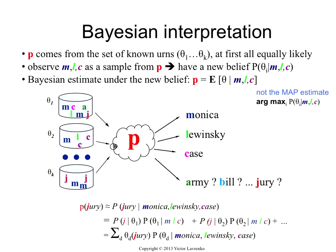So for each document D, I take the probability of seeing that urn under that document — that's just the relative frequency with a little bit of smoothing. And then I have a weight on the document, which is the belief that that urn was the urn P. That weight is given by the Bayesian posterior of seeing 'Monica Lewinsky' and 'Case' as observations in the document.